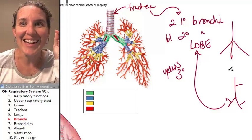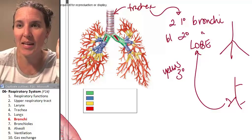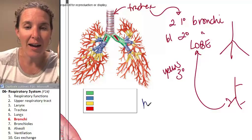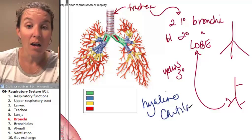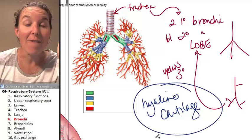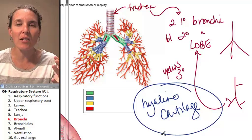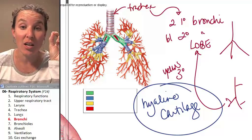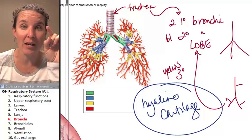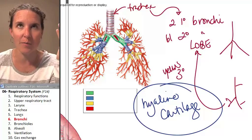But the thing that connects them all is the magical hyaline cartilage. If you see hyaline cartilage or you feel hyaline cartilage, you are palpating a bronchus of some flavor.